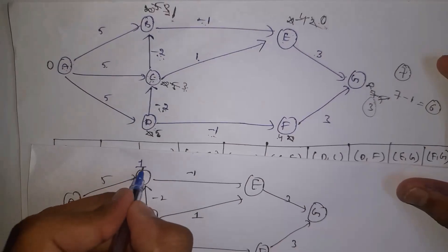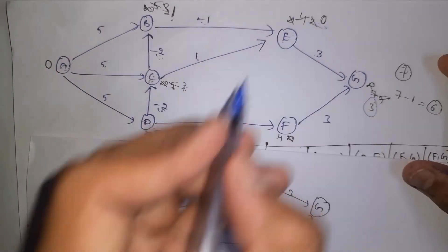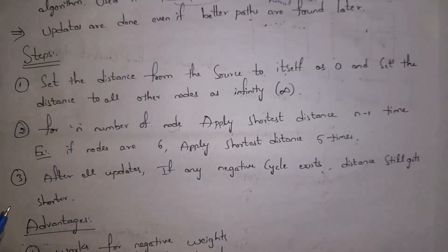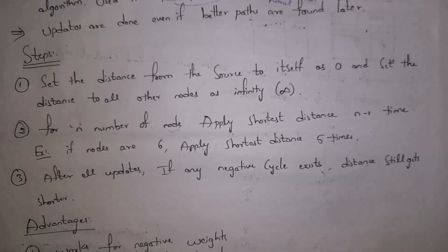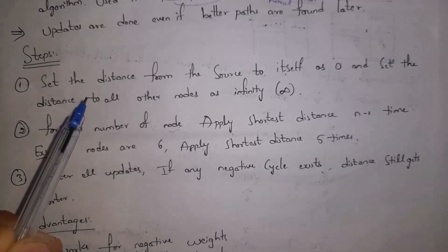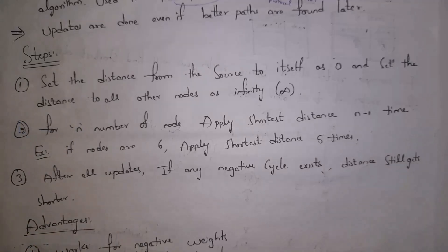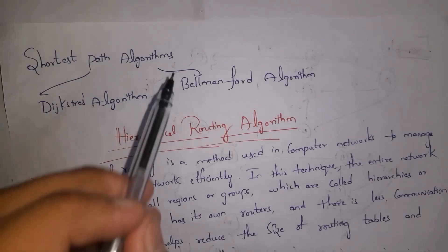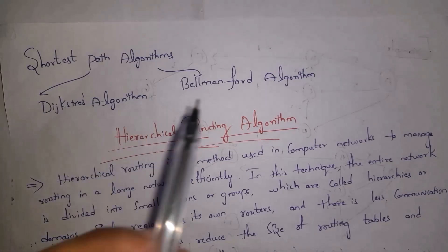We got the shortest distances from the source node to all other nodes. Shortest paths: B=1, C=3, D=5, E=0, F=4, G=3. In Bellman-Ford algorithm we select one source node, mark it 0, mark all others as infinity, and replace infinity with the distance as we visit each node. If there are n nodes, we apply shortest distance n minus 1 times. In an exam, if asked to explain shortest path algorithms, you need to explain both Dijkstra's algorithm and Bellman-Ford algorithm.